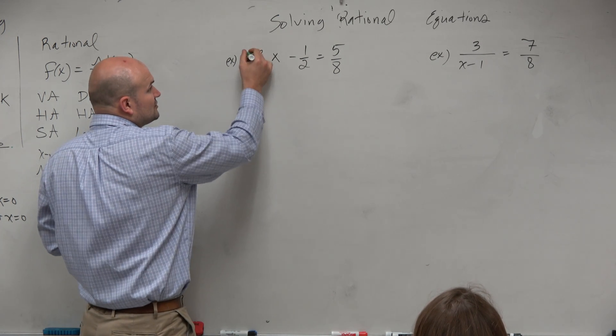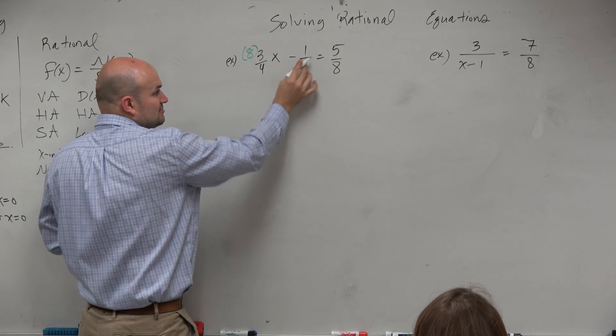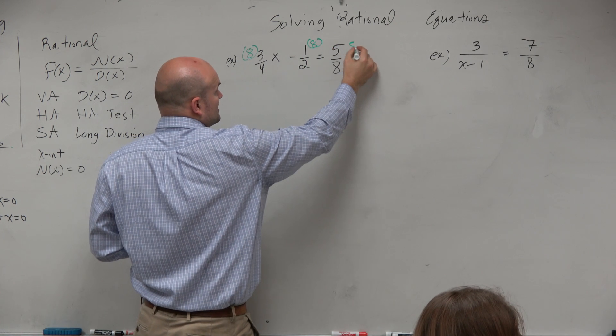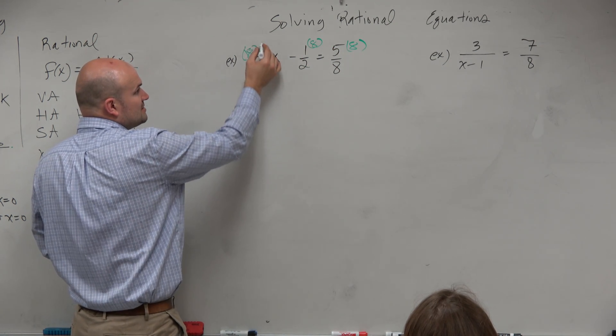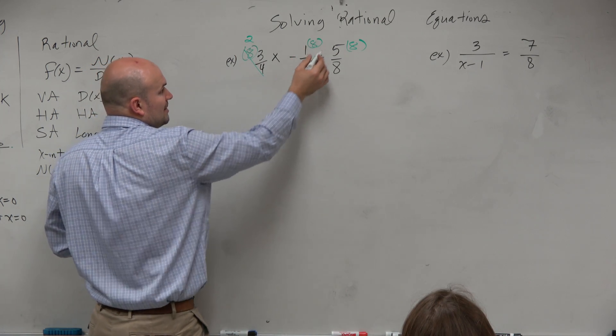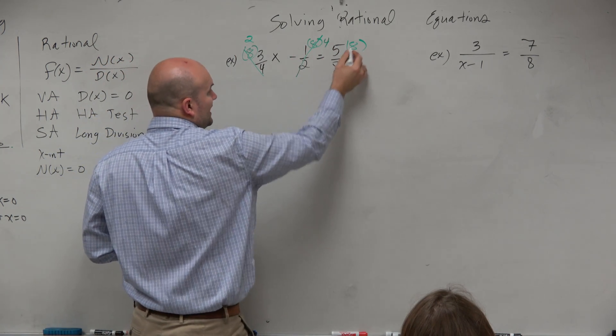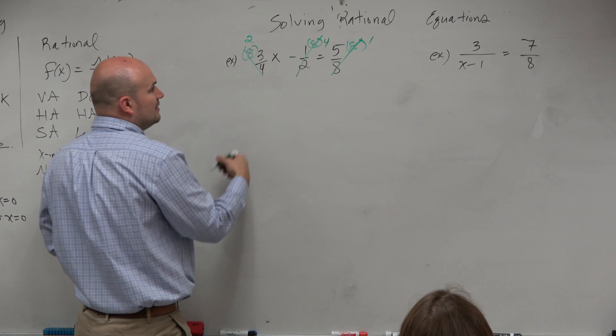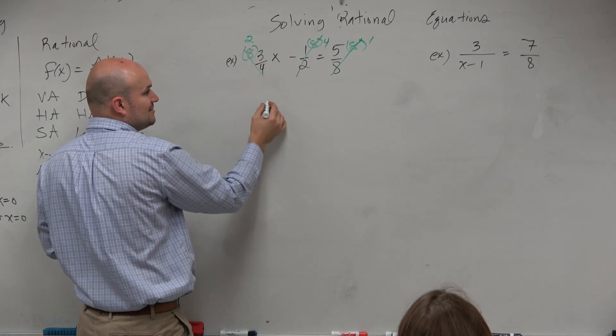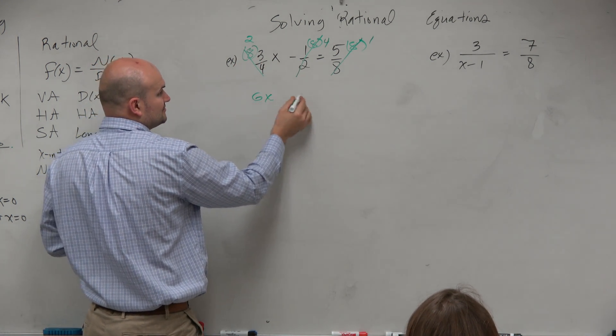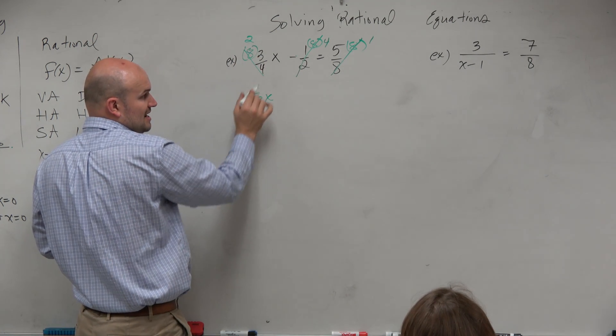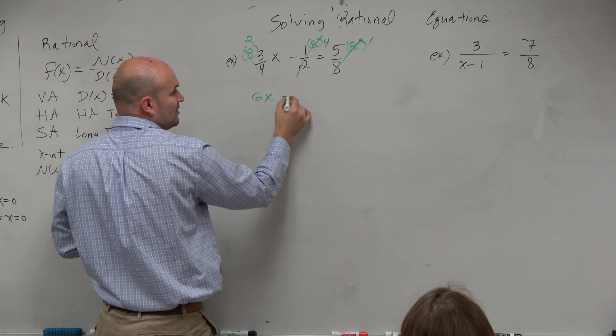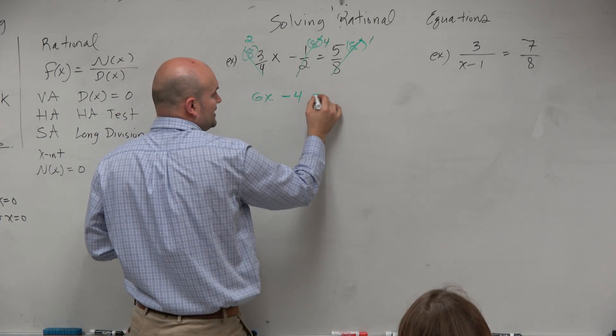So if I multiply every single term, term separated by subtraction or the equal sign, every single term by 8, watch what happens. 8 divided by 4 is 2, 8 divided by 2 is 4, 8 divided by 8 is 1. Now what I'm left with is just 2 times 3x is 6x. 2 times 3x, negative 1 times 4 is negative 4, and then equal to 5.